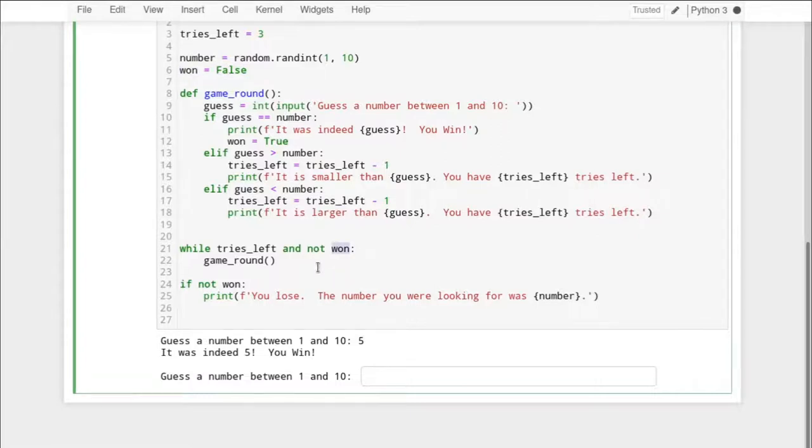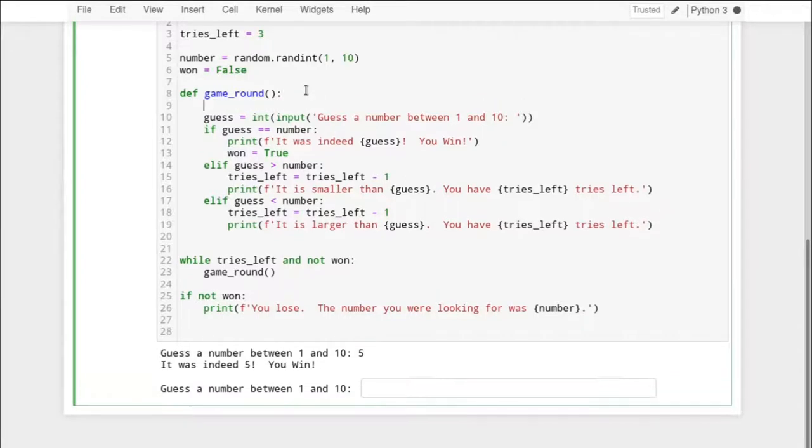And when we're down here in our loop, and it looks at the variable won, it's not looking at this local variable, because that's gone. That's gone as soon as this function returns. Instead, it's looking at this won here, which is still set to false. All right. So you might ask, well, how do I manipulate this global variable inside my function? Well, there is a way to do that, and I'm going to show it to you.